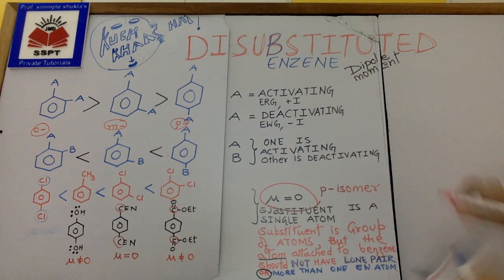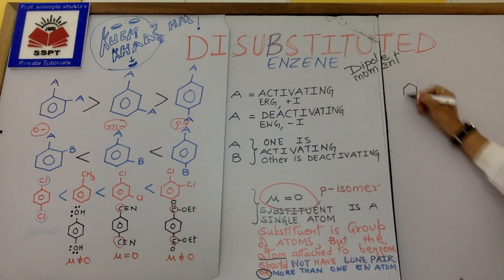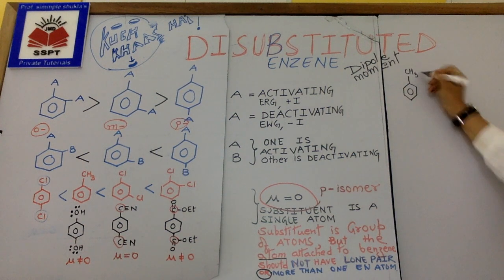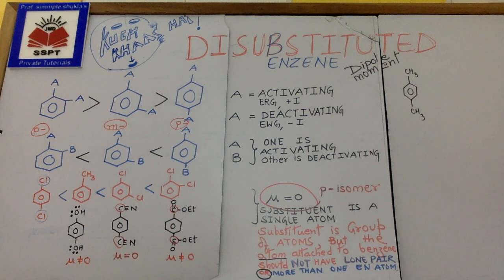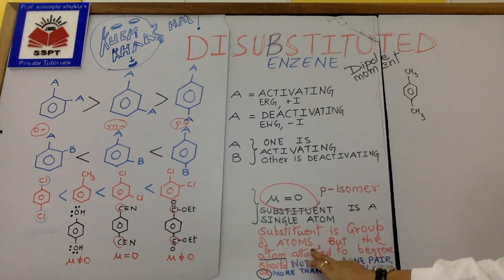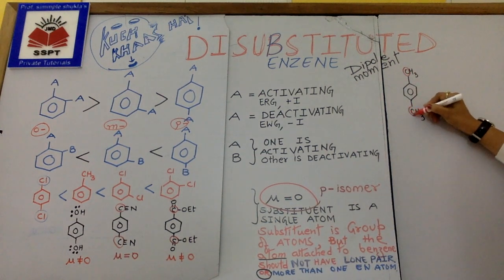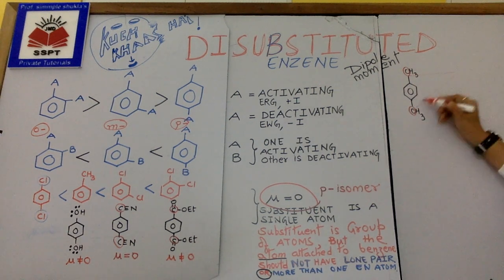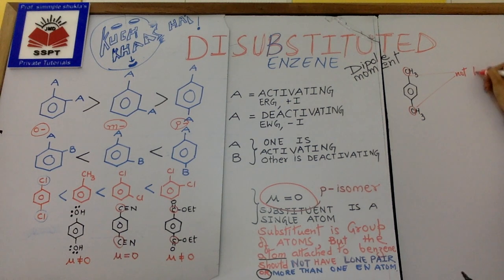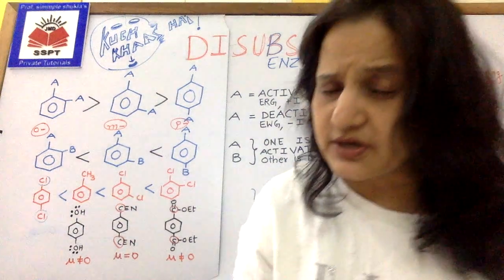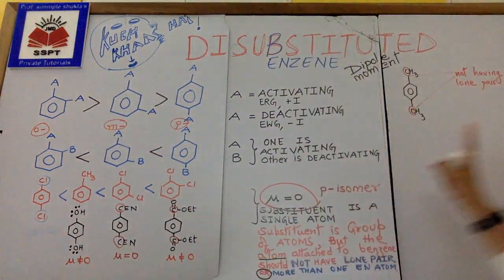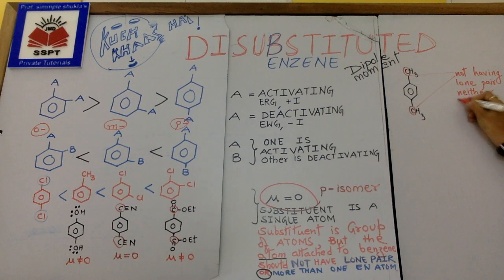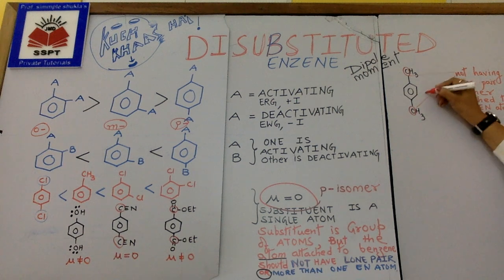Let us take another example — an ethyl-type group. The substituent is a group of atoms, but the atom attached to benzene is carbon. Carbon has no lone pairs, and carbon is attached only to hydrogen — hydrogen is not an electronegative atom. So carbon is not attached to any electronegative atom, meaning the dipole moment is also zero.